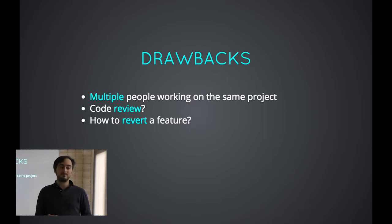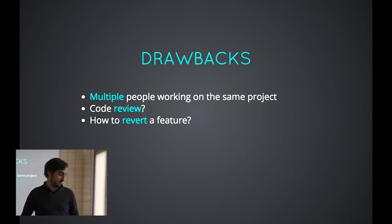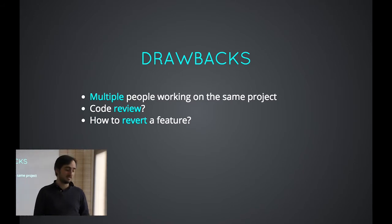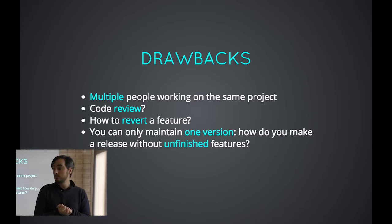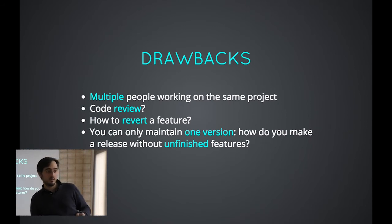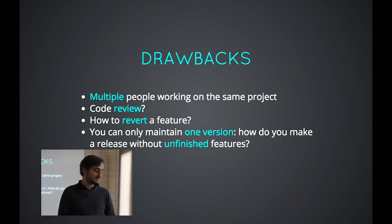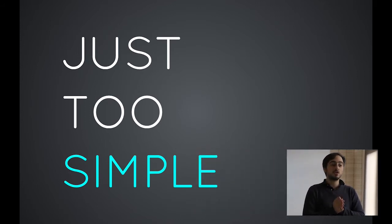How do you do code review when you don't have branches? The best tool for code reviewing is to use GitHub-style platforms, and you can't do pull requests without branches, so it's a bit messed up. How do you revert a feature? If a feature spans three or four commits, you have to revert all the commits and find them — it's tough. And you can only maintain one version, meaning you cannot make a release with unfinished features. So it's just too simple; you should not use that if you have at least two developers on your project.